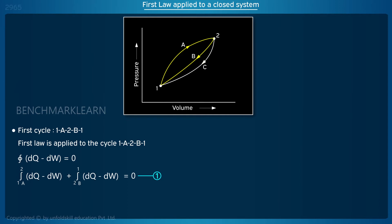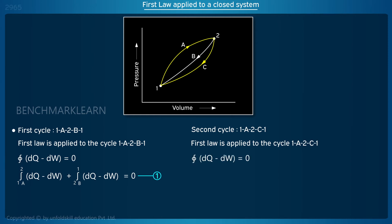Now let us consider the second cycle, cycle 1A2C1. Here the process starts from state 1 to state 2 through path A, and returns to state 1 through path C. Now the first law is applied to the cycle 1A2C1. The cyclic integral of dQ minus dW is equal to 0. The integral from 1 to 2 of (dQ minus dW) through path A, plus the integral from 2 to 1 of (dQ minus dW) through path C, is equal to 0 — this is numbered as equation 2.